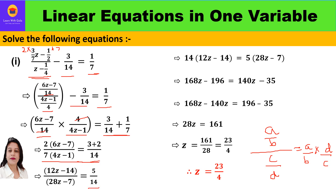On the left-hand side, opening the bracket: 2 times 6z is 12z, 2 times minus 7 is minus 14, giving 12z minus 14. Then 7 times 4z is 28z, and 7 times minus 1 is minus 7, giving 28z minus 7. Now we shall cross multiply.